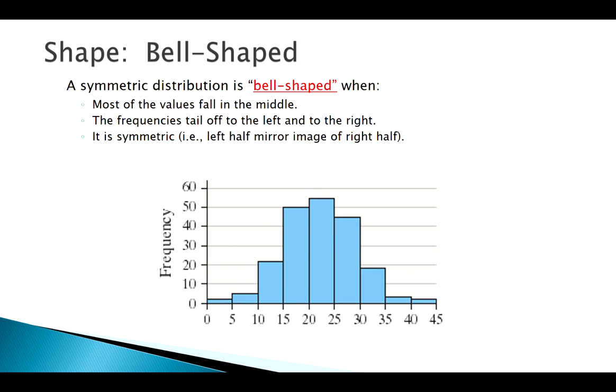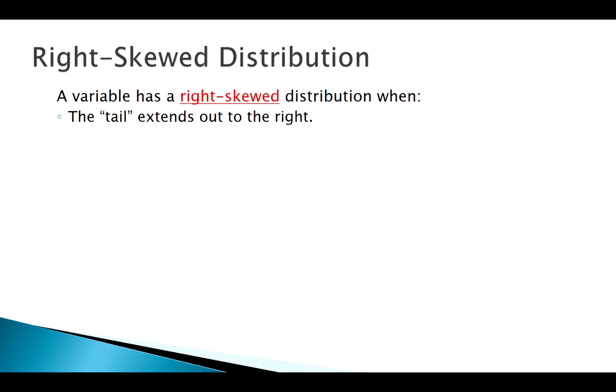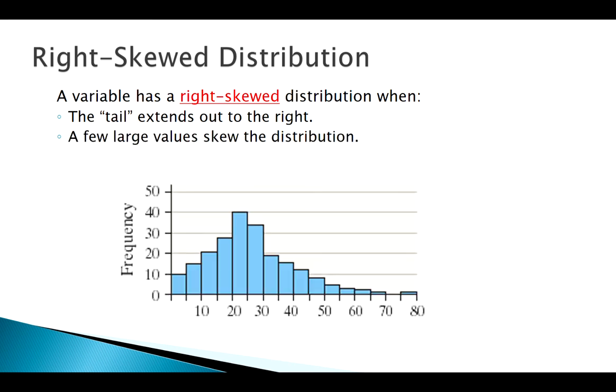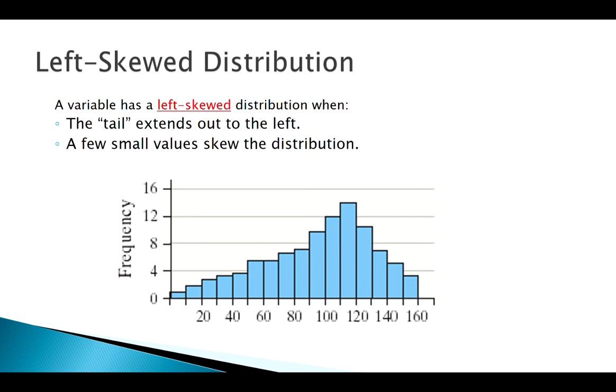What about skewed distributions? We need to know if it's left or right skewed. We talk about the skewness in the direction of those extreme values, those potential outliers, or what we'll see on a graph as a long tail. So a right skewed distribution, we have most of our data over here on the left, but we see that tail extend to the right. So we describe our skewness in the direction of the tail. Left skewed distribution is where our tail extends to the left. Our extreme values, our potential outliers, maybe would be over here to the left.